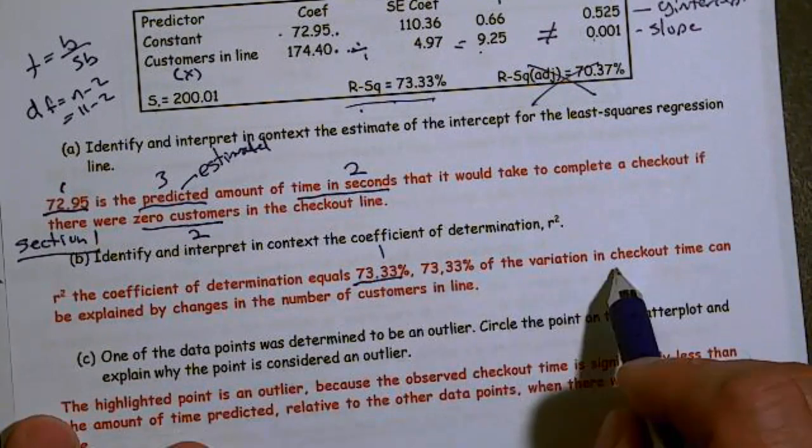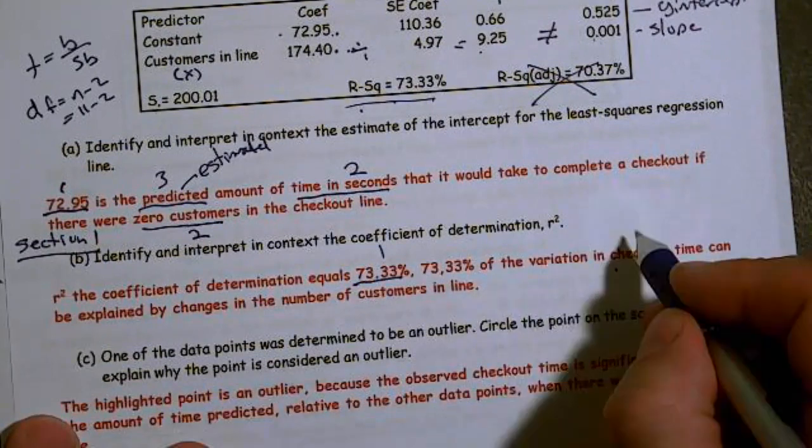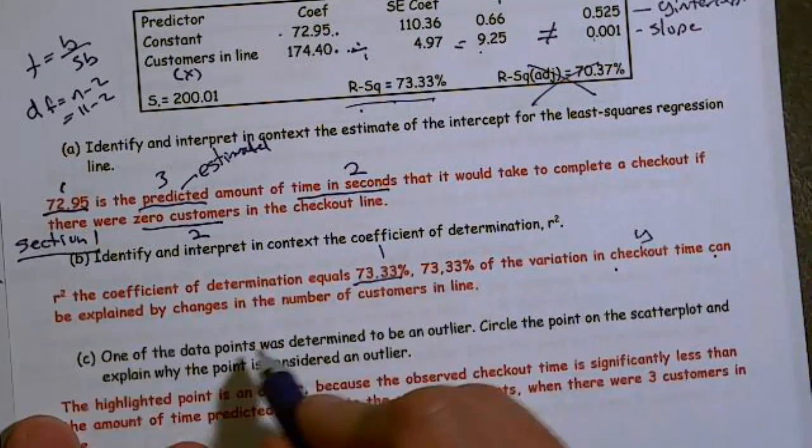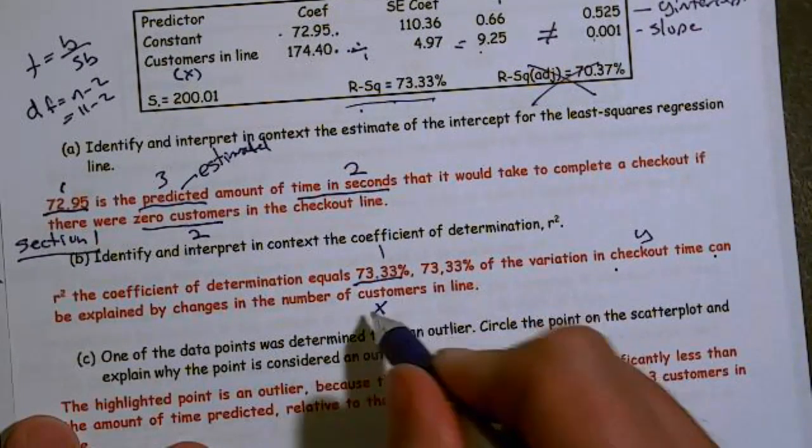73.3% of the variation in checkout time in Y can be explained by changes in the number of customers in line. That's X.